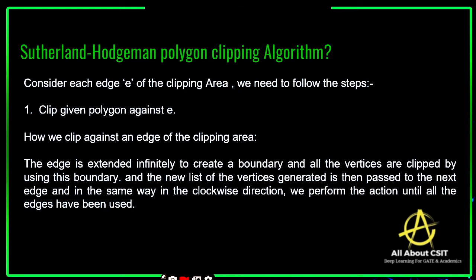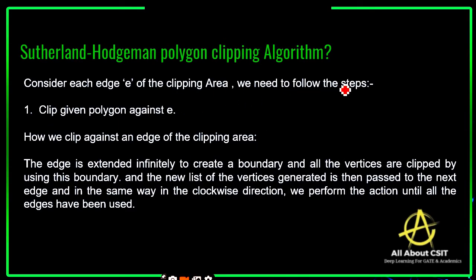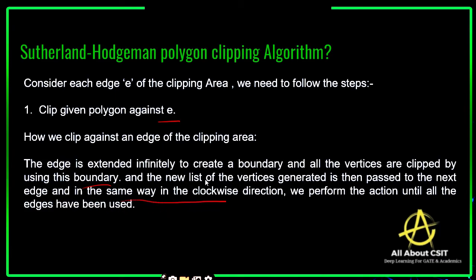These are the steps to follow for Sutherland-Hodgeman polygon clipping. Consider each edge of the clipping area E. The left edge of the clipping area is extended infinitely to create a boundary, and all vertices are clipped using this boundary. The new list of vertices generated is passed to the next edge in clockwise direction. We perform this action until all edges have been used.